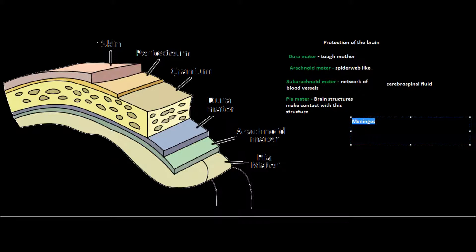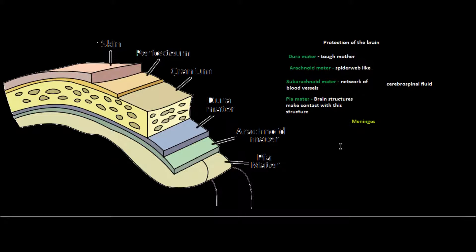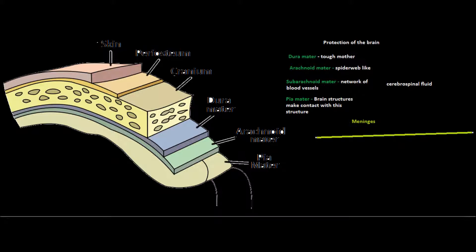So these three structures — or four if you include the subarachnoid space — make up the meninges. When people talk about the different ways the brain is protected, they refer to the meninges. It's not just the cranium or the periosteum; it's also these structures hidden much deeper within the skull.